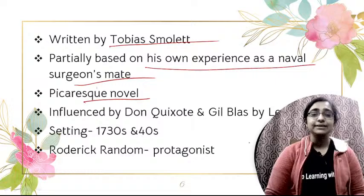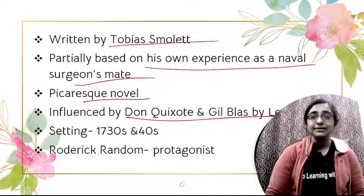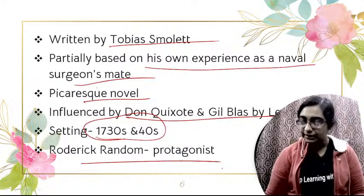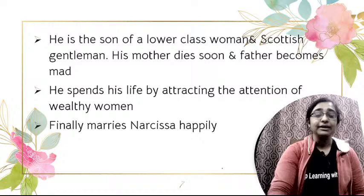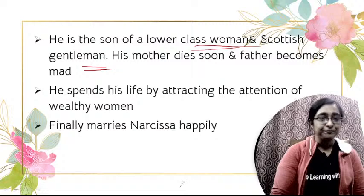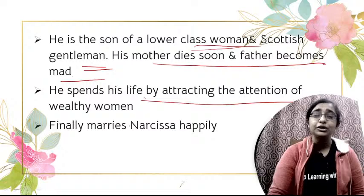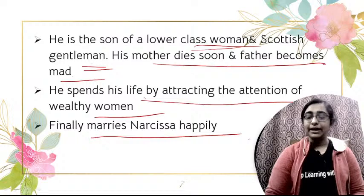The novel is obviously inspired by the great picaresque novels like Don Quixote and Gil Blas by Lesage. The setting is the 1730s and 1740s. Roderick Random is the main protagonist — he is the son of a lower-class woman and a Scottish gentleman. His mother dies soon and his father becomes mad. Almost as an orphan, he spends his life attracting the attention of wealthy women, and is finally married to Narcissa.